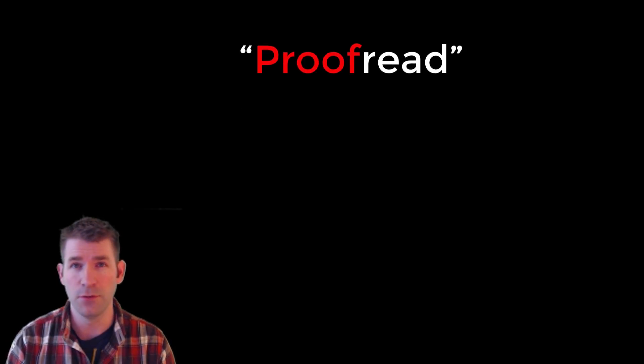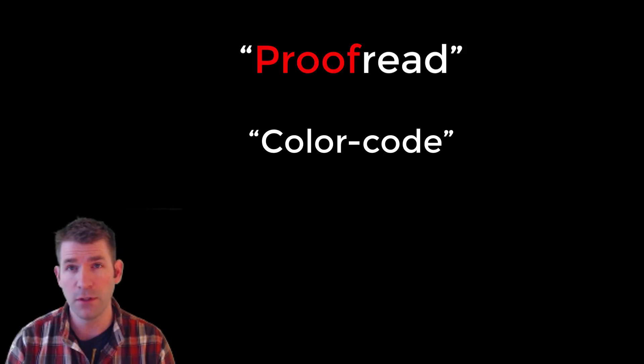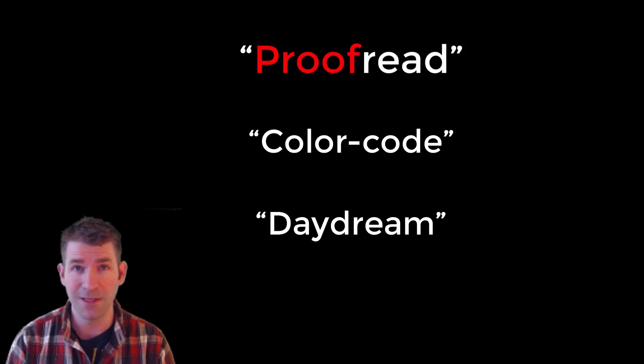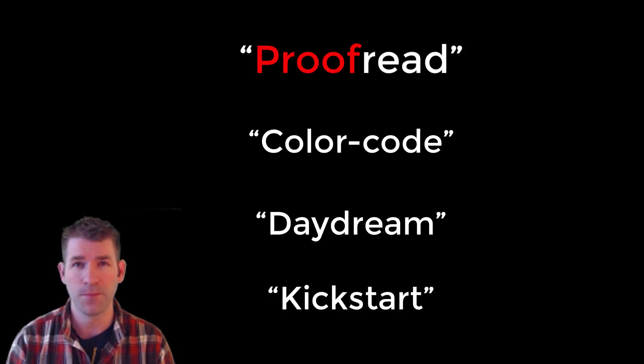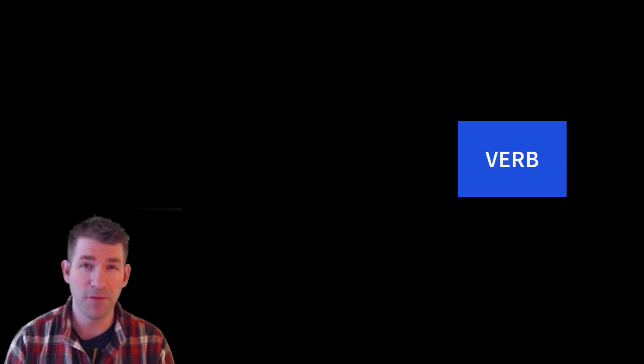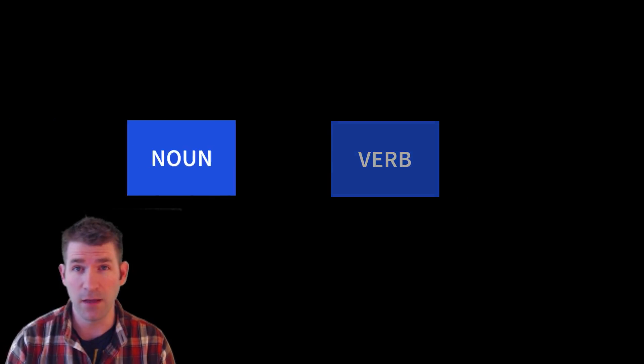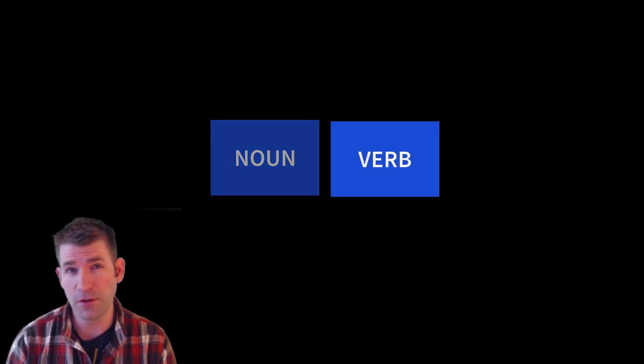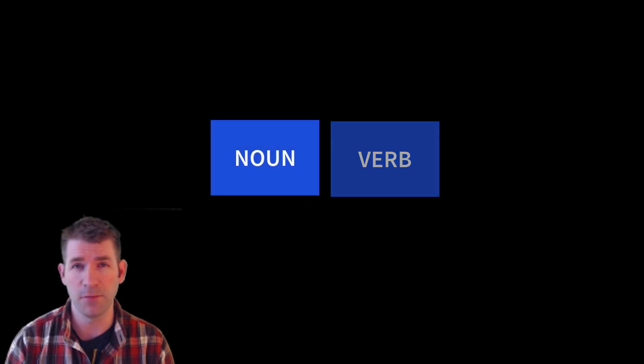Other examples include 'color code,' 'daydream,' and 'kickstart.' Sumerian does something similar, as they will often combine a verb and a noun, which functions as a direct object of the verb. Let me give you some examples, many of which you've already learned.